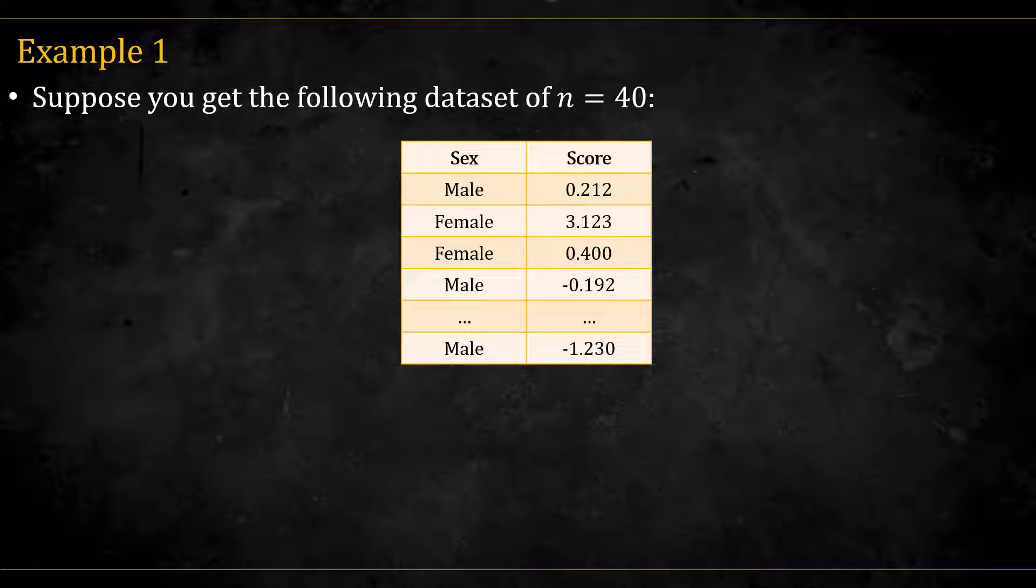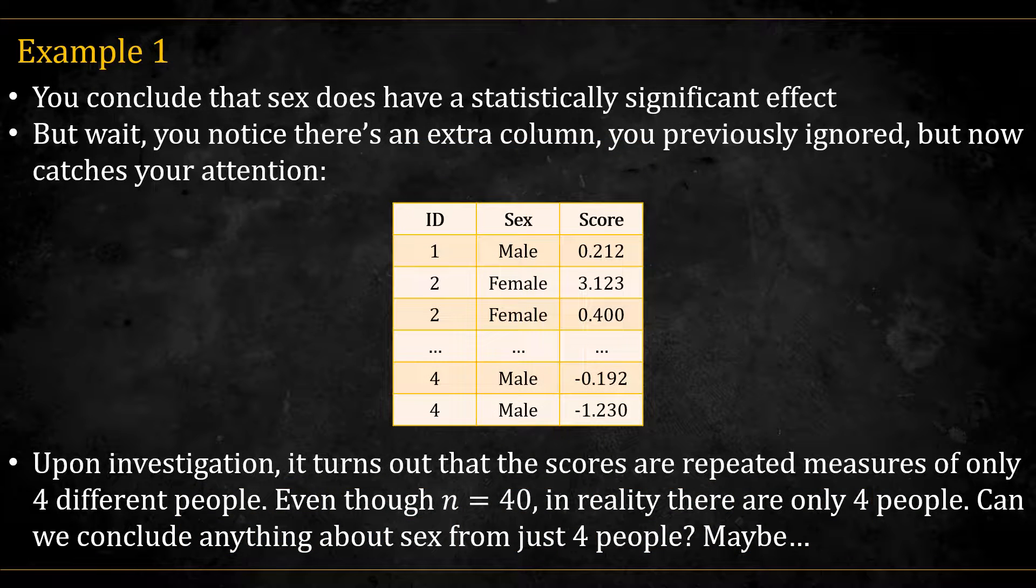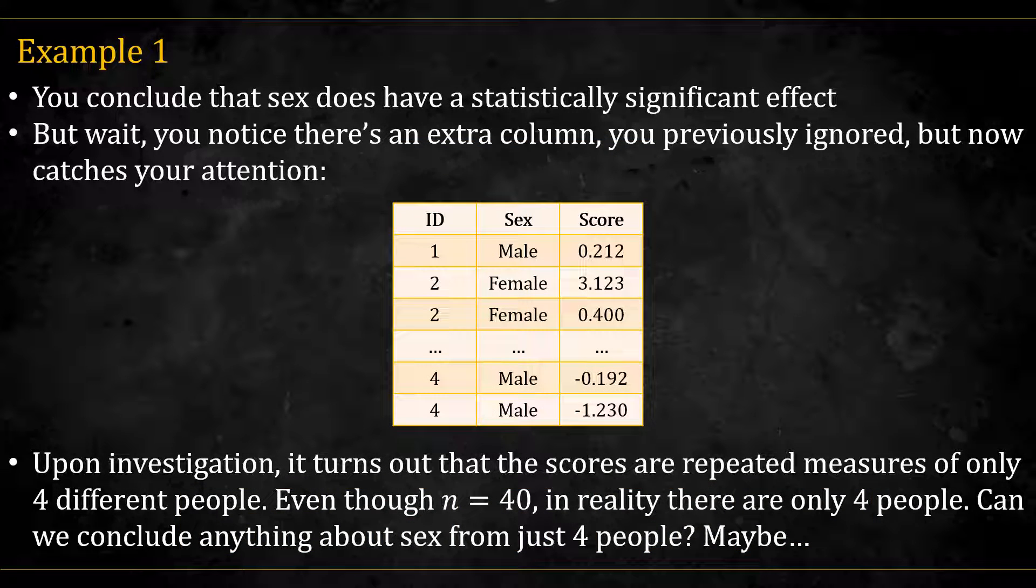Example 1. Suppose you have the following dataset of 40 observations. Two columns: x is sex, and y is score. You want to check if sex has any effect on score, and decide to run a linear regression, which is equivalent to a t-test in this scenario. The coefficient comes out with a p-value of 0.037 less than 0.05, and so apparently significant. You are about to conclude that sex does have a significant effect.